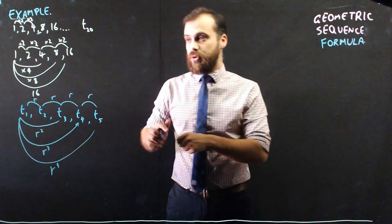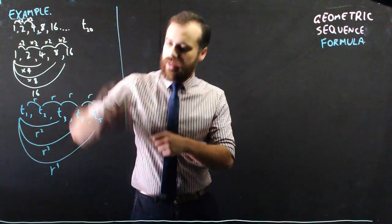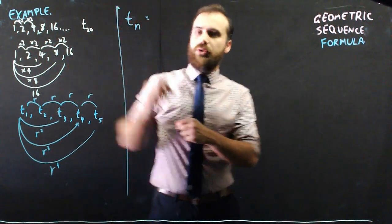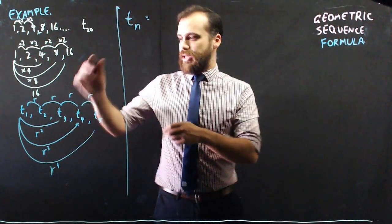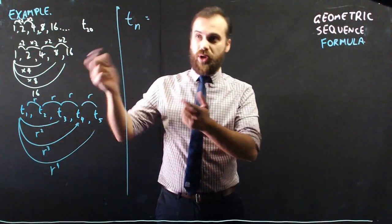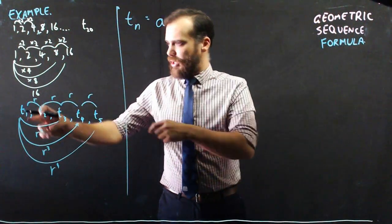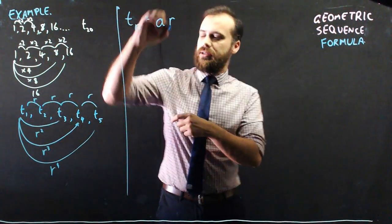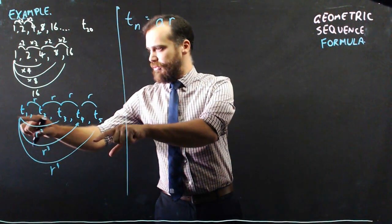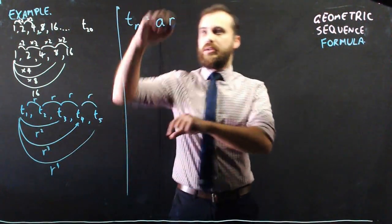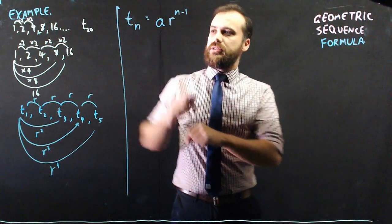So, this brings us to our formula. If I want to get, and this is the important formula, if I want to get to term N, all I need to do is take my first term, term 1, you usually call term 1 A, and then multiply it by R to the power of, if I want to get to term 5, I need to multiply it by R to the power of 4, so to the power of N minus 1.